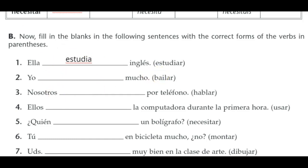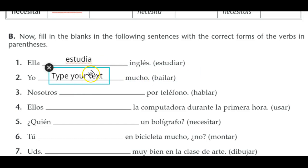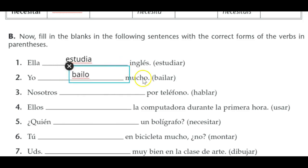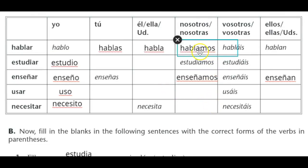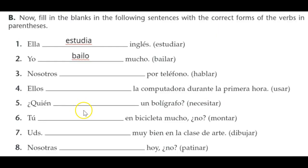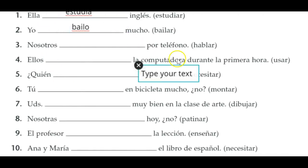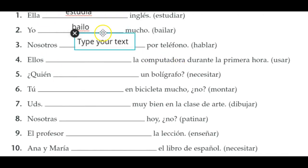Next, the verb is bailar and the subject is yo, so it becomes bailo — yo bailo mucho. Then we have nosotros with the verb hablar. We have that form right there in the chart — we're essentially just copying it. Nosotros hablamos por teléfono — we're talking on the phone.